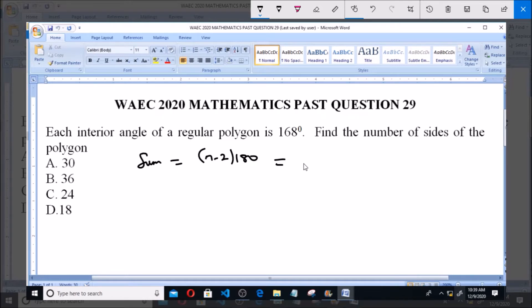So the sum of interior angles of this regular polygon is also equal to n multiplied by 168. Picking these two equations, we can now say (n - 2) times 180 is equal to 168n.